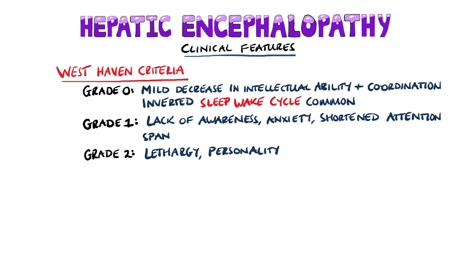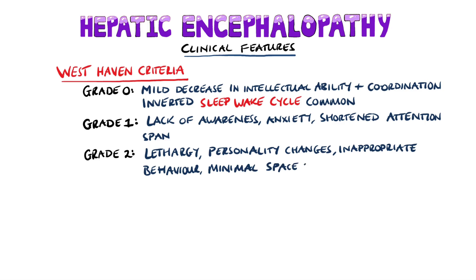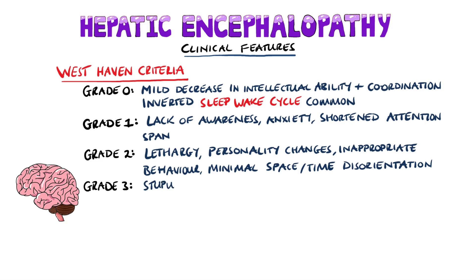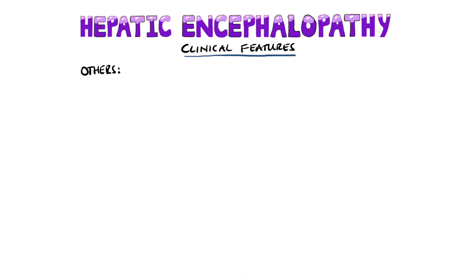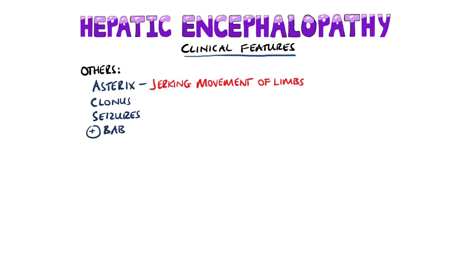Stage 2 features lethargy, subtle personality changes, inappropriate behaviour, and minimal disorientation in both time and space. Stage 3 is where patients are stuporous but responsive to verbal stimuli and have gross disorientation. Stage 4 means comatosed patients. Other features include asterixis, which is a jerking movement of the limbs, clonus, seizures, and a positive Babinski sign in the later stages. Patients may also have a musty smell on the breath, known as fetor hepaticus.